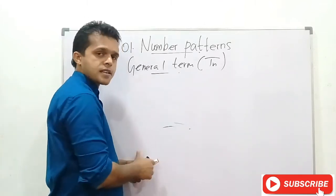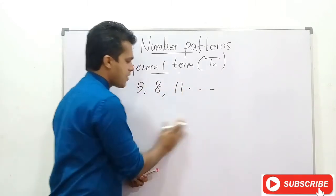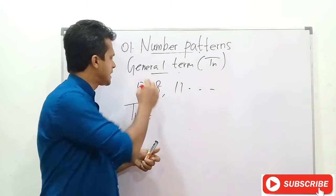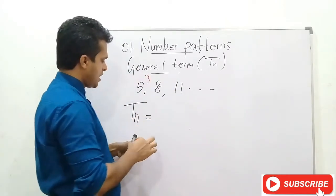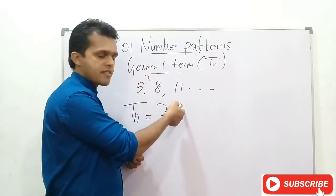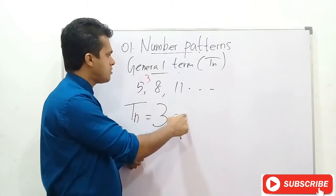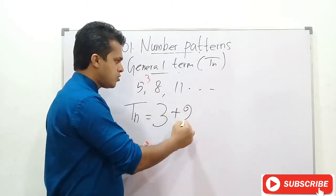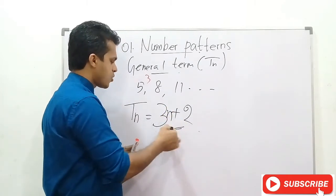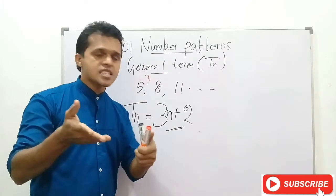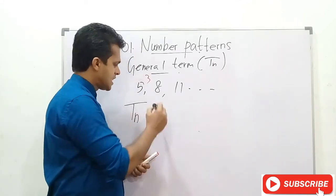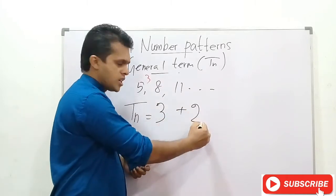Let's consider the number pattern 5, 8, 11. Let's find the general term. TN equals — first find the common difference, which is 3, since 5 plus 3 is 8 and 8 plus 3 is 11. Write 3 here. To get the first term 5, you need 3 plus 2 equals 5, so write plus 2 and N. The general term is TN equals 3N plus 2.